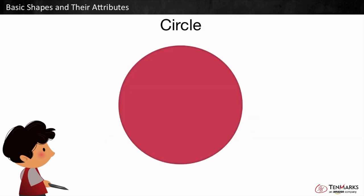This is a circle. A circle is a closed shape that has zero straight sides and zero corners. It is a curved closed shape.